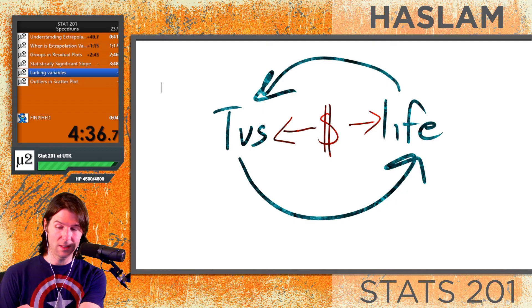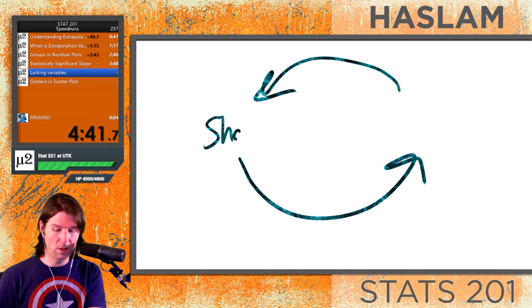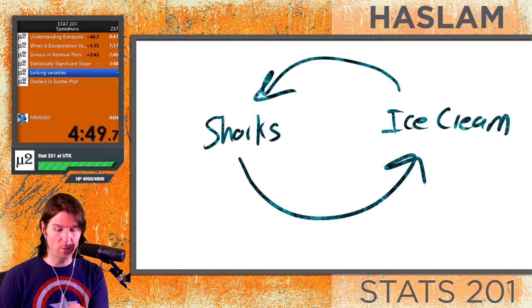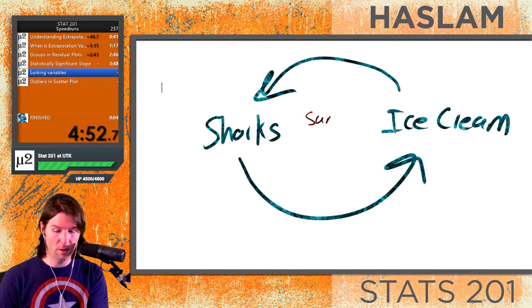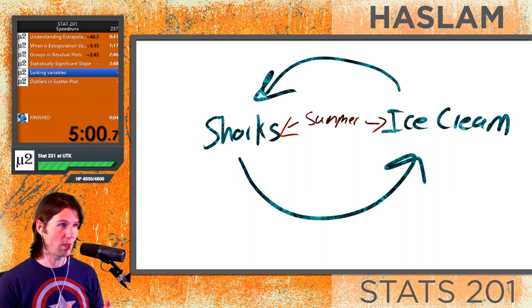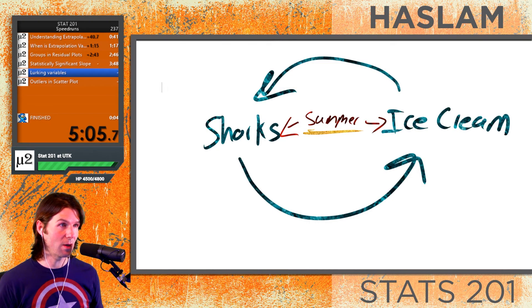There's also some classic examples we have. We use another one with shark attacks and ice cream sales. We see here that when we see more shark attacks, we see more ice cream sales. But maybe both of these variables are connected to summer. During summer, there's more ice cream sales, and during summer, there's more shark attacks. And thus, we see the connection between shark attacks and ice cream sales. So the lurking variable in this example would be summer. It's the real variable behind here.